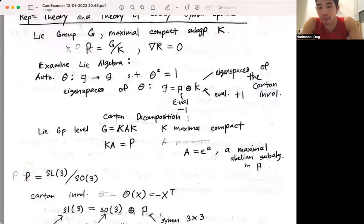At the Lie group level, we would also have a Cartan decomposition, G equals KAK, where K is the maximal compact, and A equals the exponential of little a, where little a is the maximal abelian subalgebra in P.